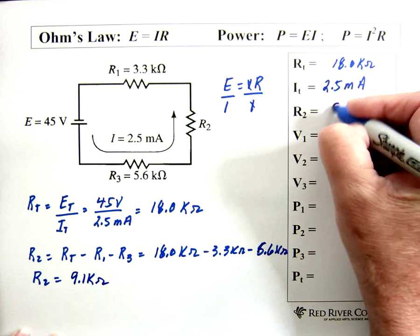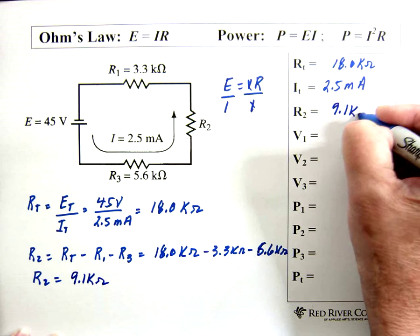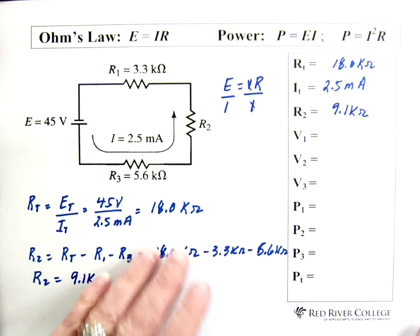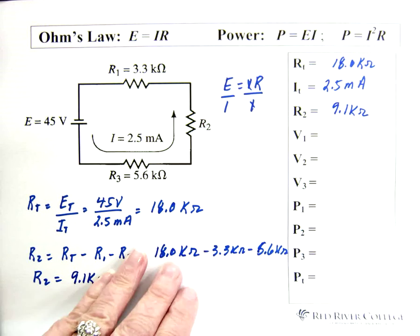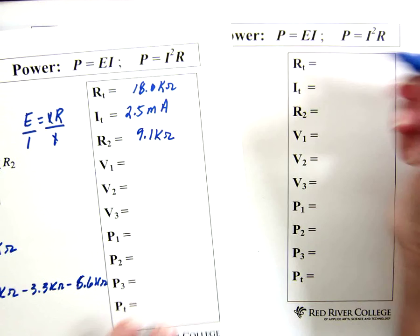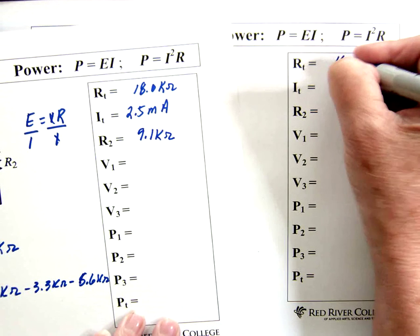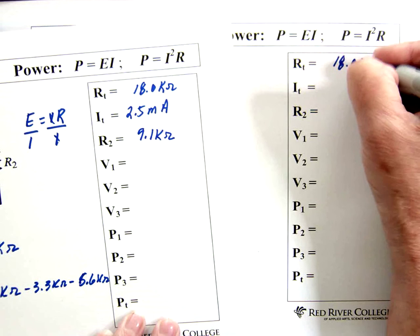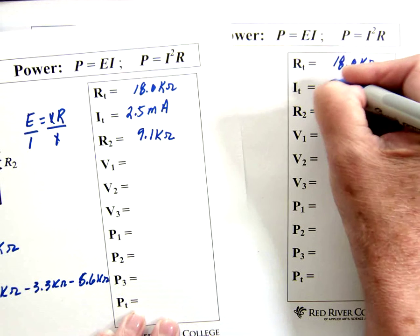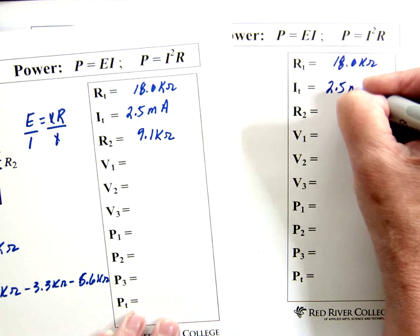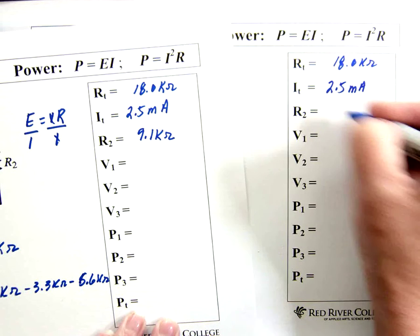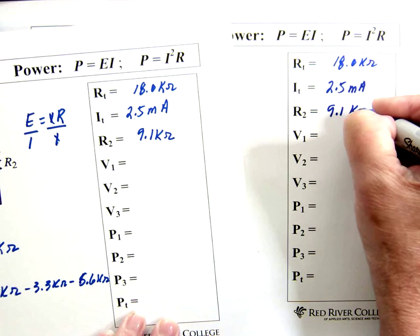18 minus 3.3 minus 5.6 equals 9.1. So R2 is 9.1 kilohm. So 9.1 kilohm. So now, let's just move on to the next page. I'm going to transfer this information. That's 18 kilohms. 2.5 milliamps, which we've been given. And 9.1 kilohm.